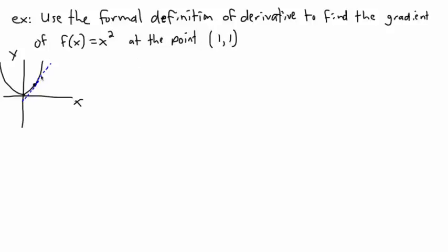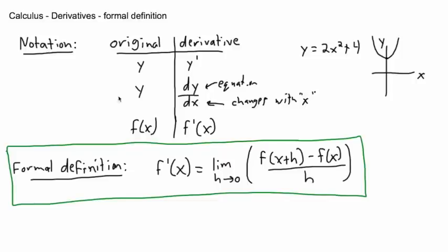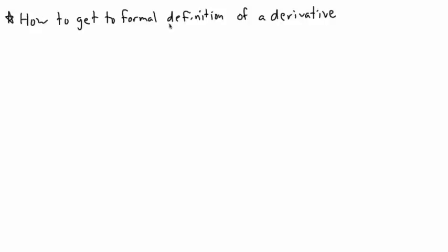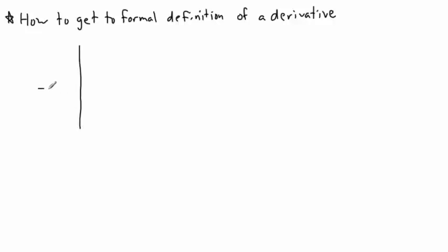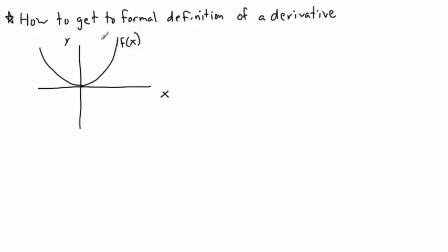At this point right here we want to find the gradient, or the slope of the tangent. I'm going to show you how to get to the formal definition of a derivative — in other words, how we actually derive it. It helps to look at a generic graph. So let's say it's some sort of graph like this; it doesn't matter what the equation is. This could be any graph, so the equation is f of x.